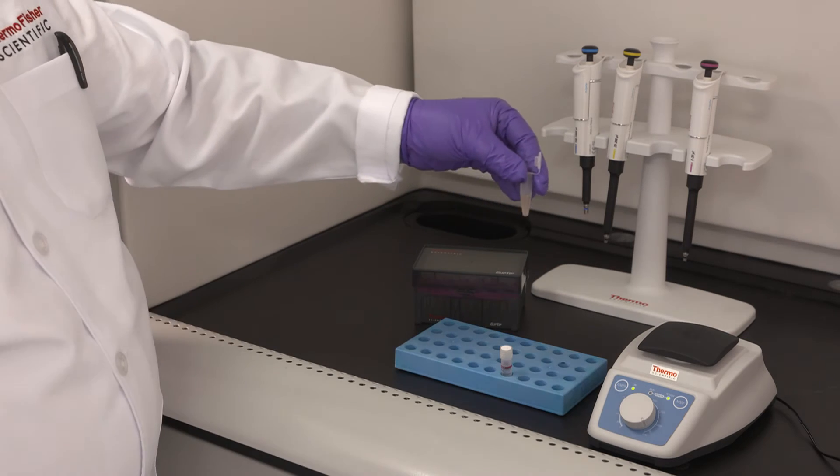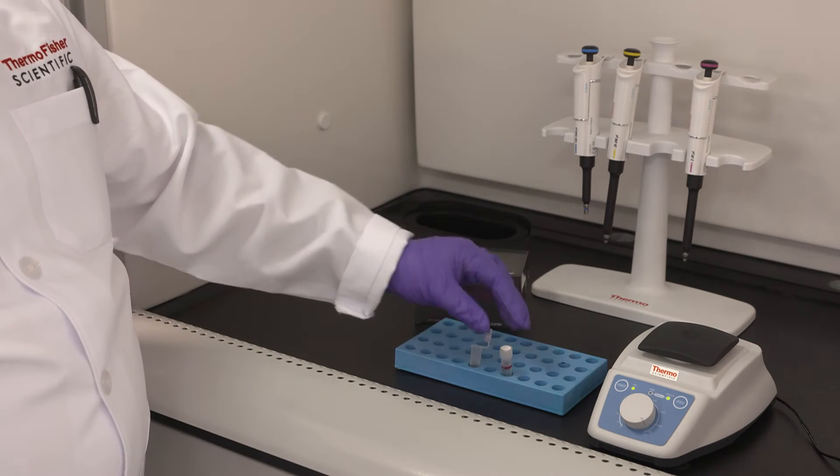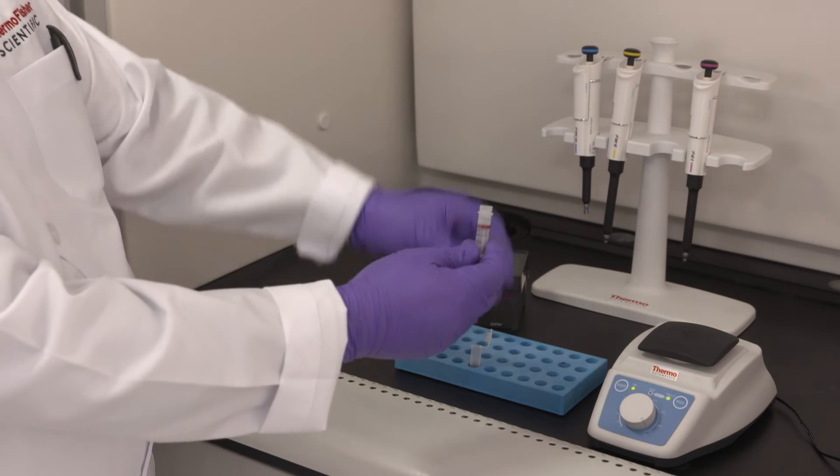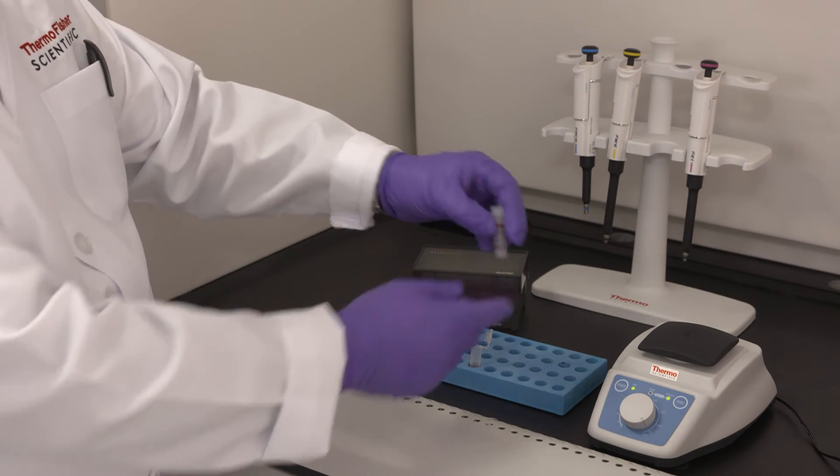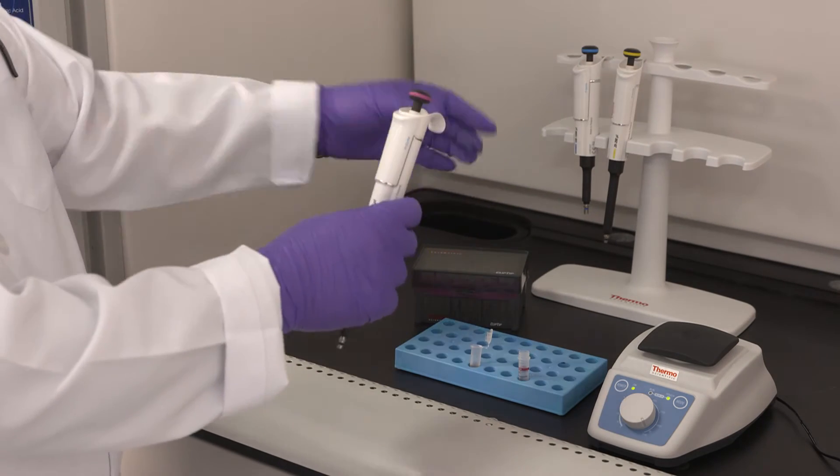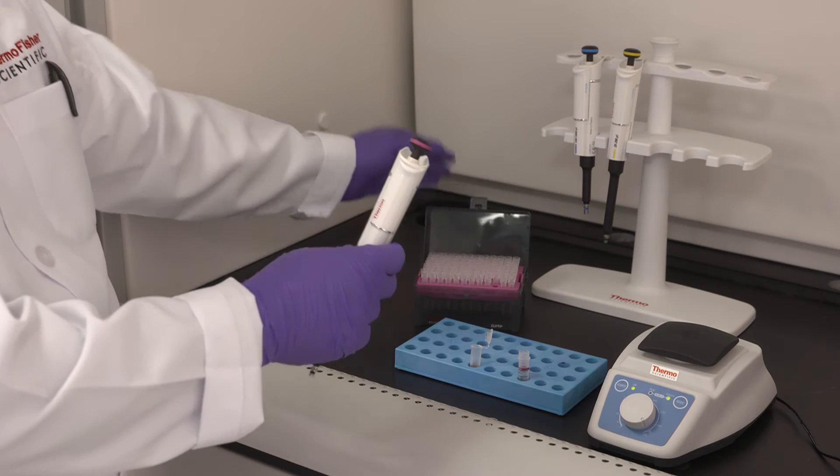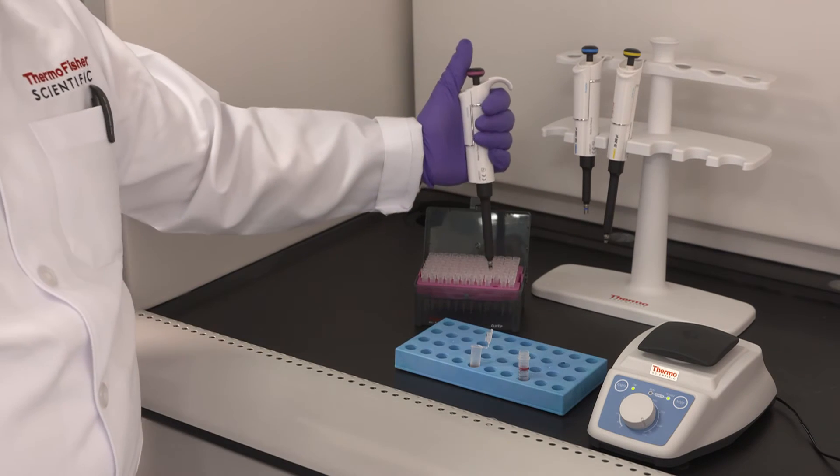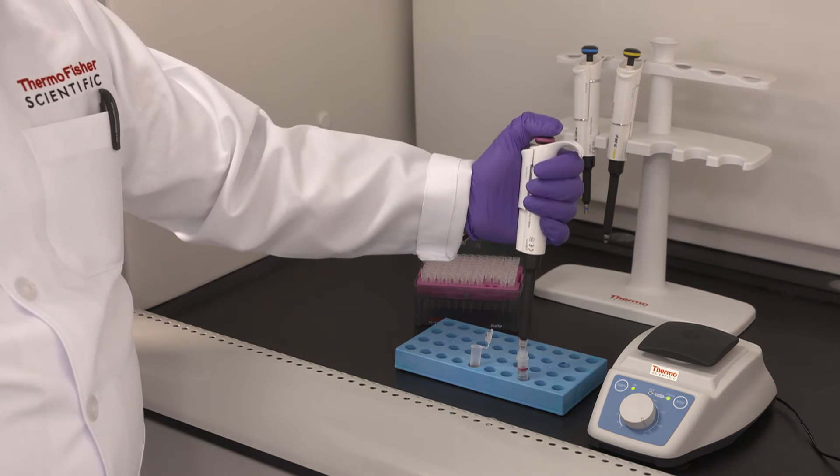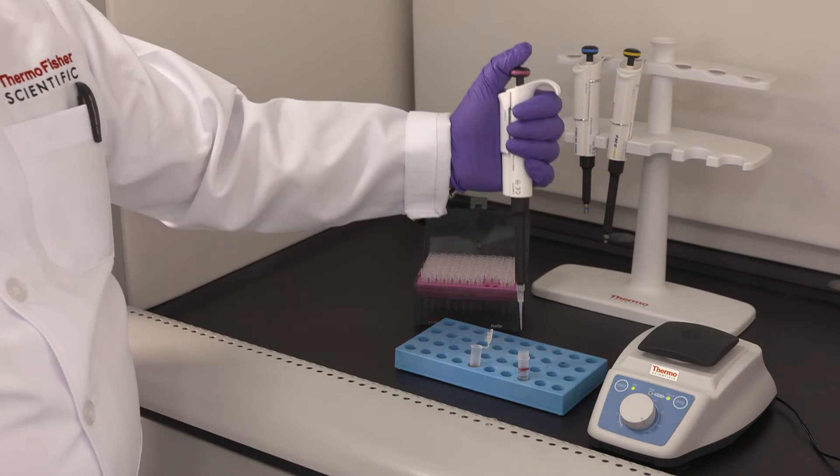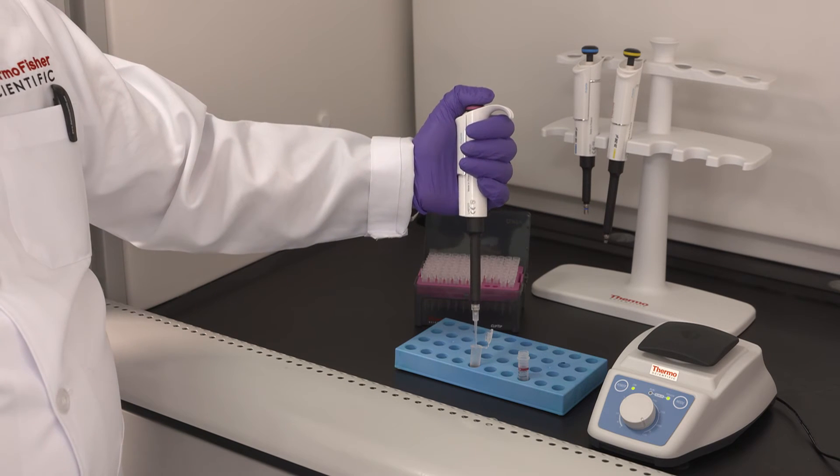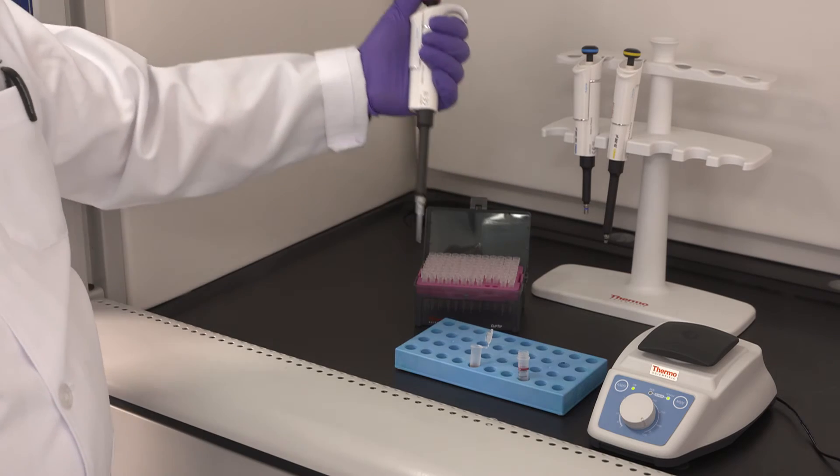We will add trypsin. We will add 2 micrograms of trypsin. We will add 10 microliters of a solution that has been already prepared where we add 20 micrograms of trypsin dissolved in 100 microliters of 1 millimolar HCl solution. So we are adding 10 microliters to the sample.